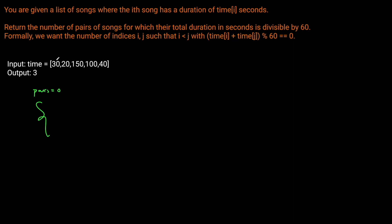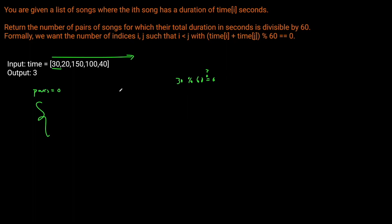We iterate through our times from left to right. Processing 30: is it directly divisible by 60? No, we get a remainder of 30. So we look in our dictionary for a value equal to 60 minus (30 modulo 60), which is 60 minus 30 equals 30. Is there a song with remainder 30 in the dictionary? No — this is the first element — so we simply populate the dictionary with 30, count of one.